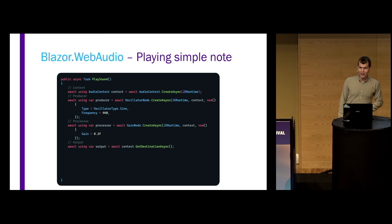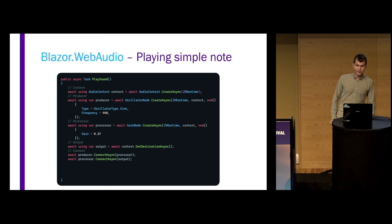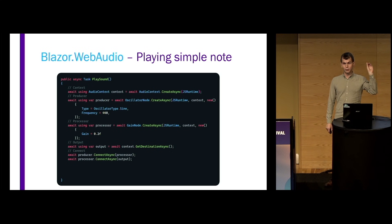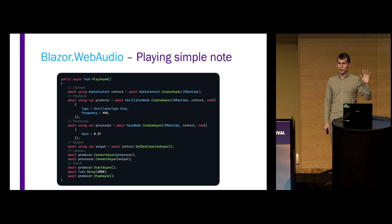And in the end, we have a little helper method from the context to get the destination — our speaker — that we can play the sound through. Then we connect all these different nodes using the connect method, connecting the producer to the processor, the processor to the output. And finally, we can start it, make some delay, say we should play for two seconds, and then stop.